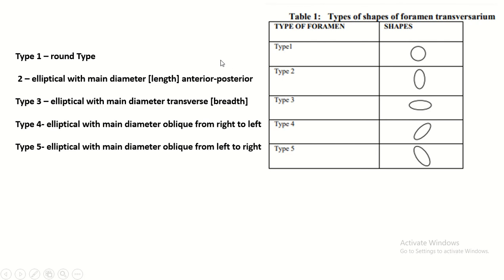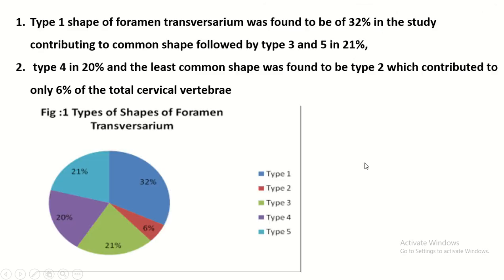The seventh cervical foramen transversarium only transmits the vertebral vein and nerves, not the artery. Regarding shape, there are different types observed: Type 1 is round; Type 2 is elliptical with the main diameter oriented anteroposteriorly; Type 3 is elliptical with the main diameter oriented transversely; Type 4 has an oblique diameter directed right to left.